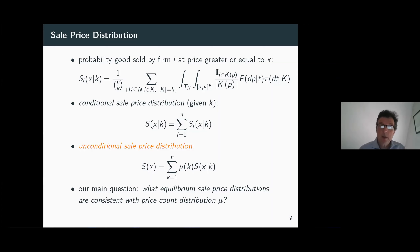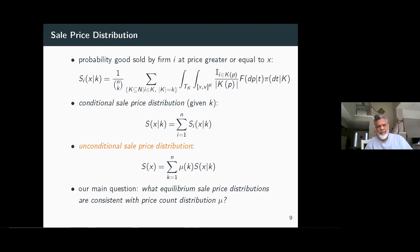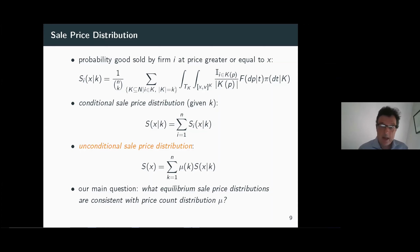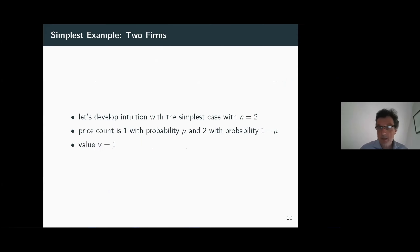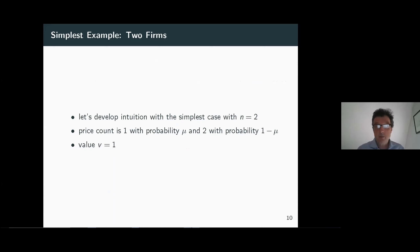Let me give you the main idea of the results by means of a very simple example, and then indicate what generalizes and state the main result. We start with the simplest possible example: the case of at most two firms. There is a probability mu that there's only one firm making an offer, and probability one minus mu that there are two offers. We normalize values to one.